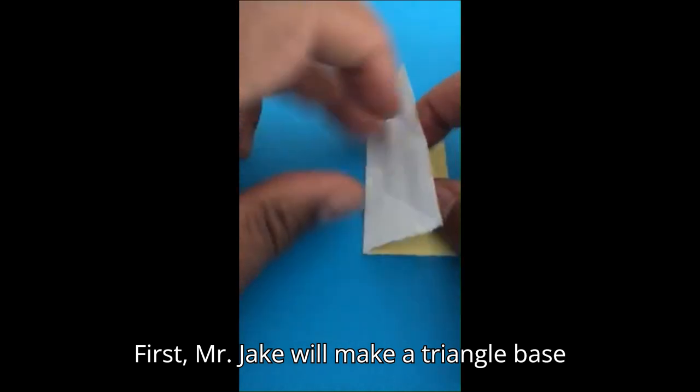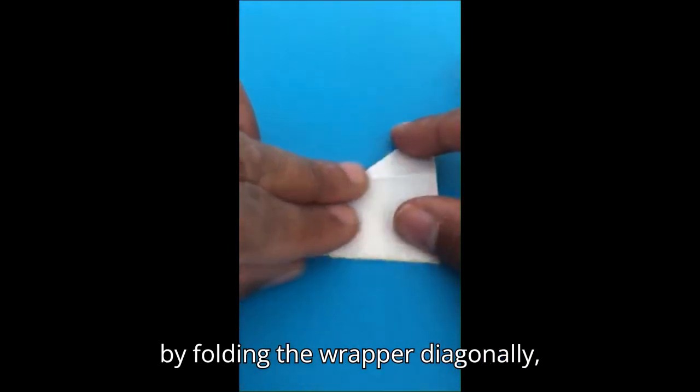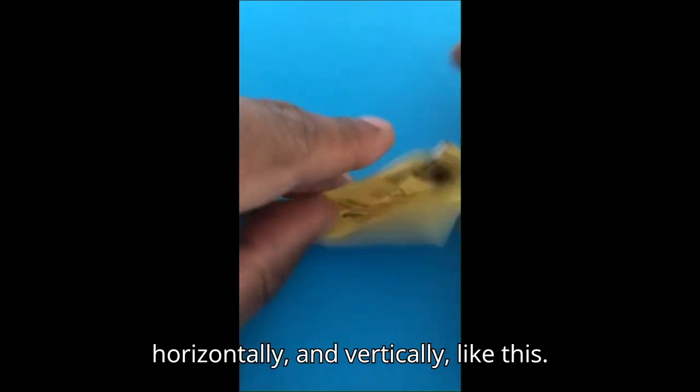First, Mr. Jake will make a triangle base by folding the wrapper diagonally, horizontally, and vertically, like this.